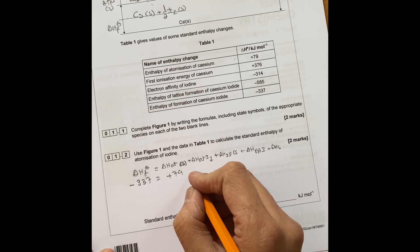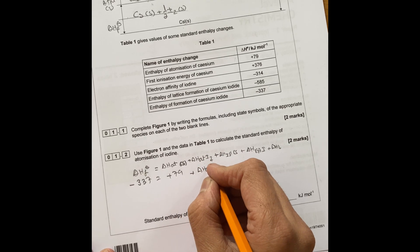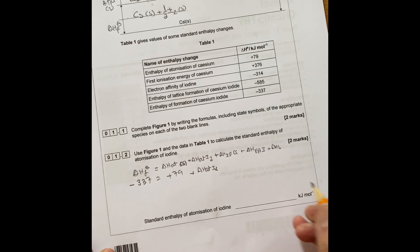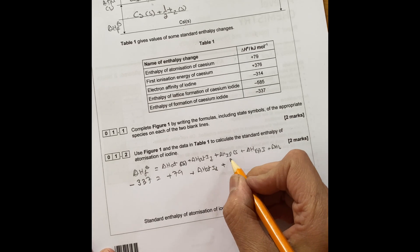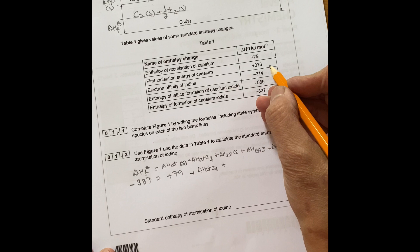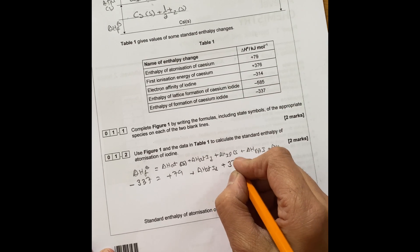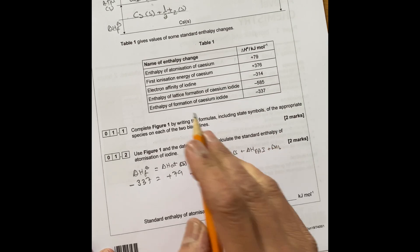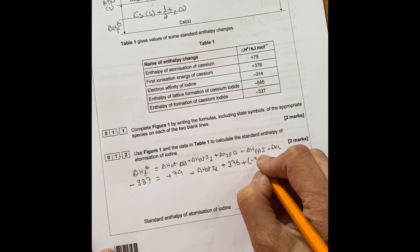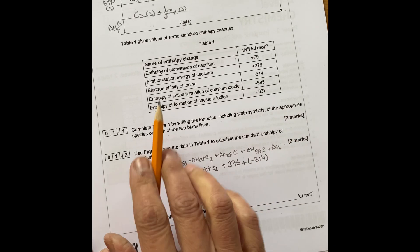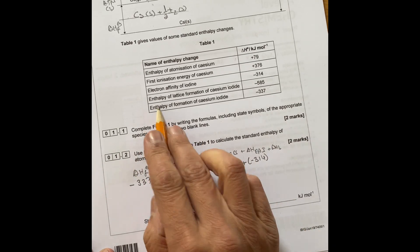Then you got atomization of iodine, which is what you need to know, so that's your unknown. Plus ionization energy of cesium is plus 376, plus electron affinity which is minus 314. Then you got plus lattice enthalpy which is minus 585.